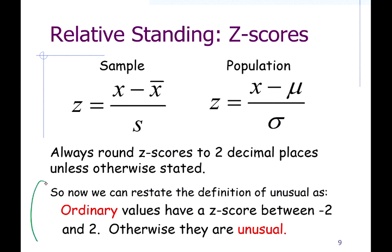We've already talked about ordinary and unusual values. The term 'unusual' isn't black and white — one value can be more unusual than another. For example, seeing someone who is six foot nine inches tall is statistically unusual, but seeing someone who's seven foot four is more unusual. There are levels to being unusual.